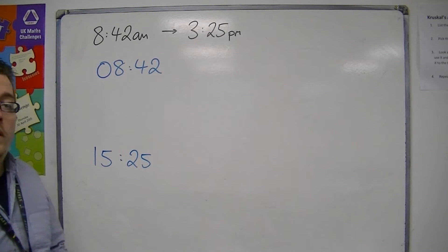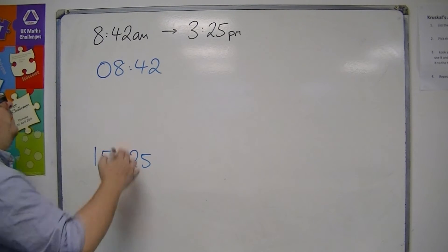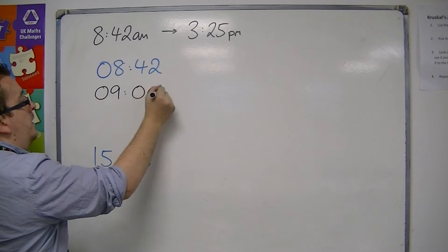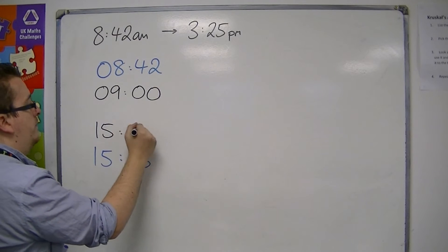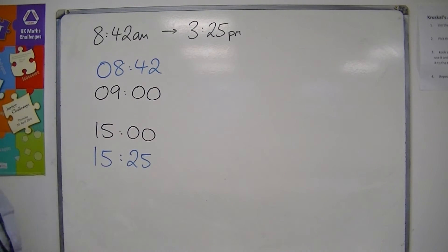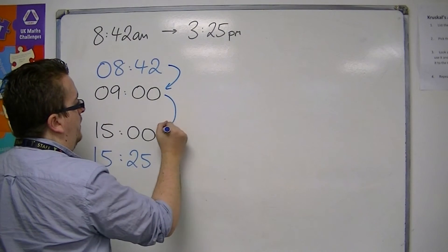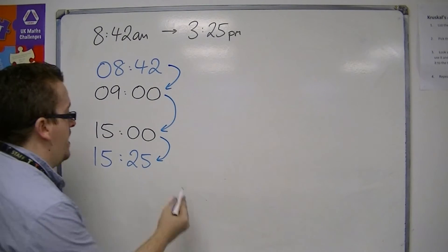And what I want to do is I want to split this problem up so that I'm looking at how many minutes will get me to 9 o'clock, then how many hours will get me to 3 o'clock, and then again how many minutes will get me to 25 past 3. And so I'm looking at these time gaps and adding up my three answers.